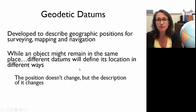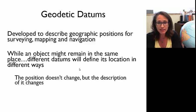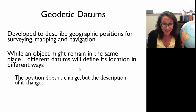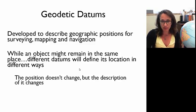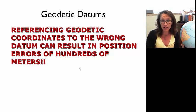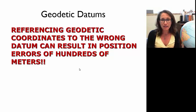Geodetic datums are developed to describe our geographic positions. An object might remain in the same place, but if you change the datum, the way you describe its position will change. The actual physical location of the point doesn't change, but the description of its position will change. If we reference geodetic coordinates to the wrong datum, you can end up with errors of hundreds of meters — your point can actually plot in the wrong place.